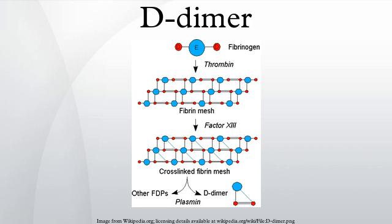Another thrombin-generated enzyme, factor XIII, then cross-links the fibrin protofibrils at the D-fragment site, leading to the formation of an insoluble gel which serves as a scaffold for blood clot formation. The circulating enzyme plasmin, the main enzyme of fibrinolysis, cleaves the fibrin gel in a number of places.